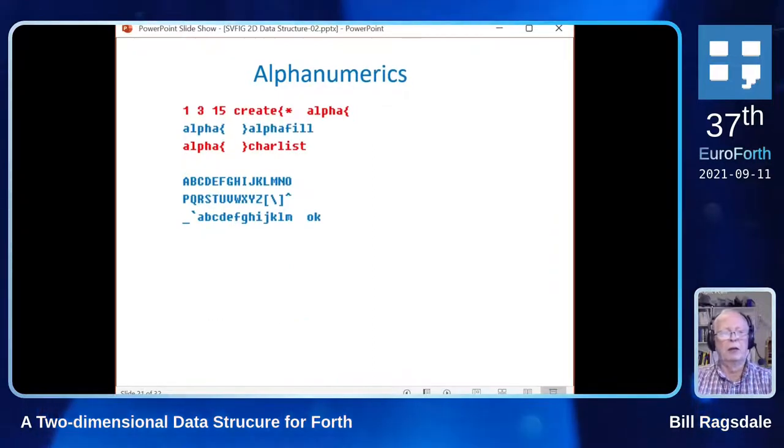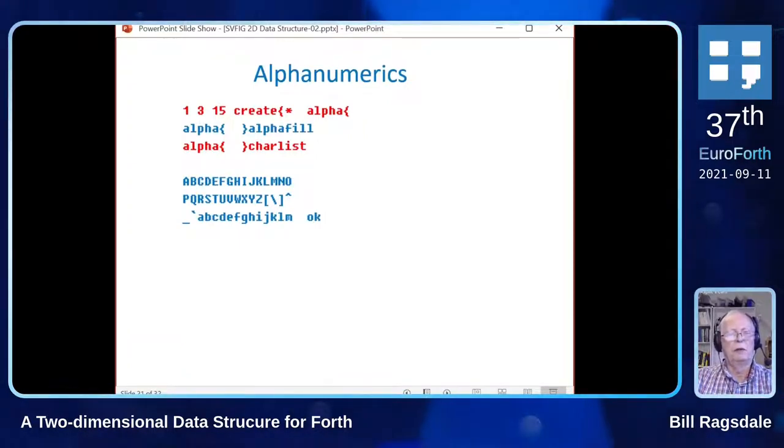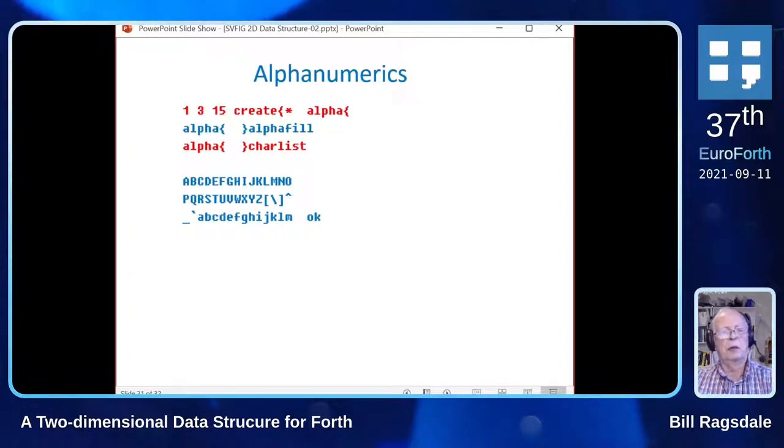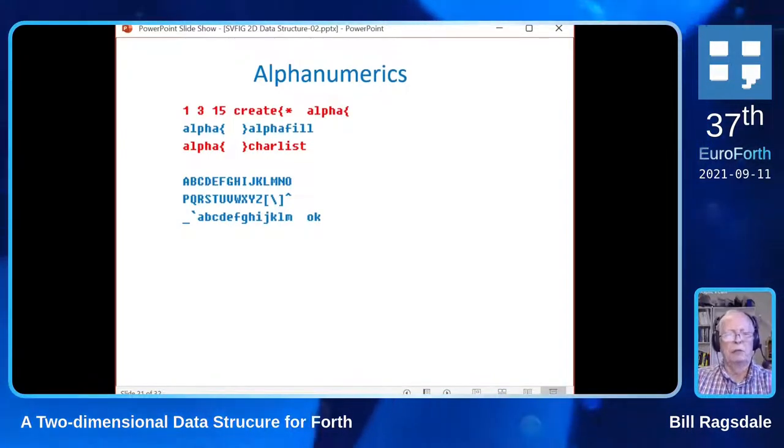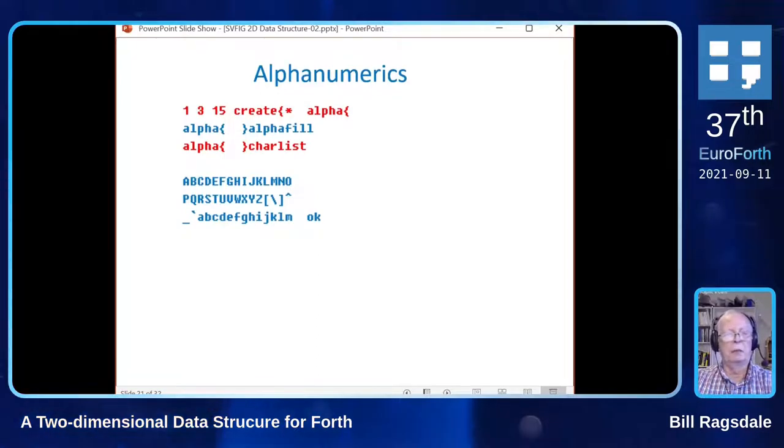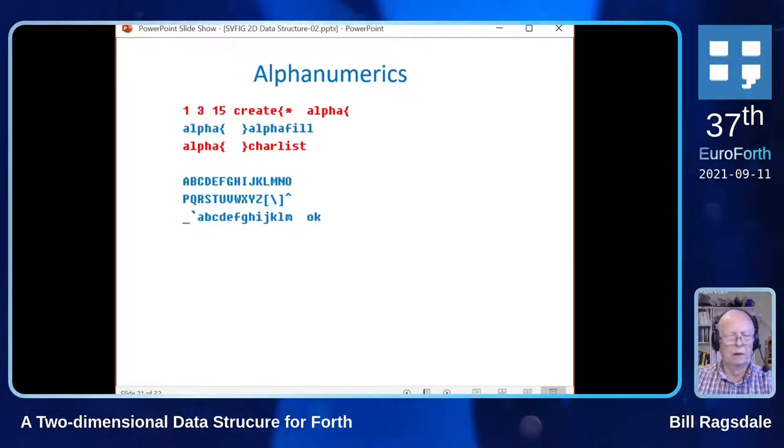Here's an example of alpha numerics. Again, as I said, they're quite limited. In this case, I am generating a... the 1-3-15 says make the cell size one, give me three rows, 15 columns. It's created as the name alpha. Then the word alpha fill fills it with the alphabet starting with the capital letter A, and then a character list lists them all. And we see the alphabet there. This sort of alpha numerics would probably be useful for report formatting and headers for reports.